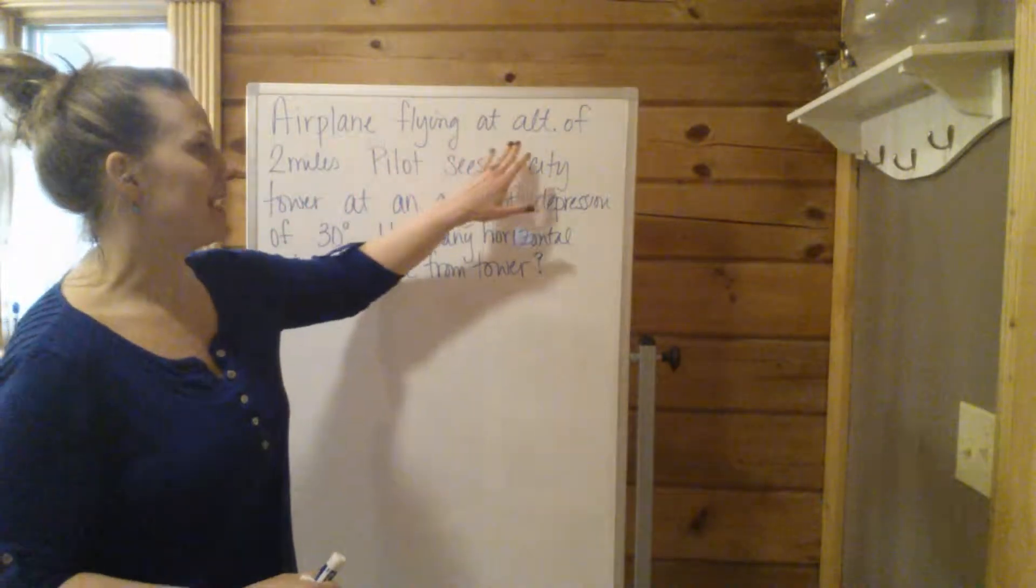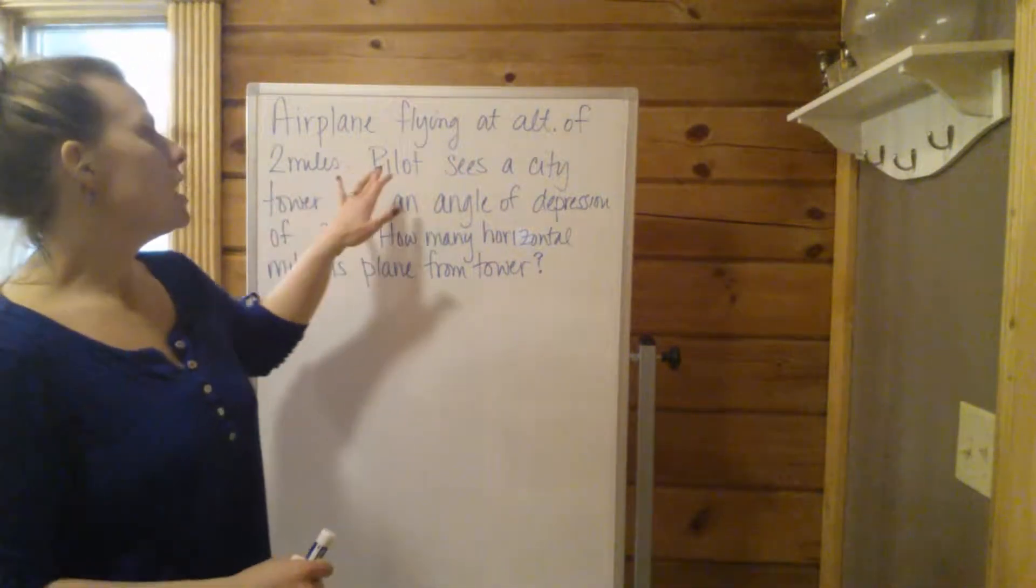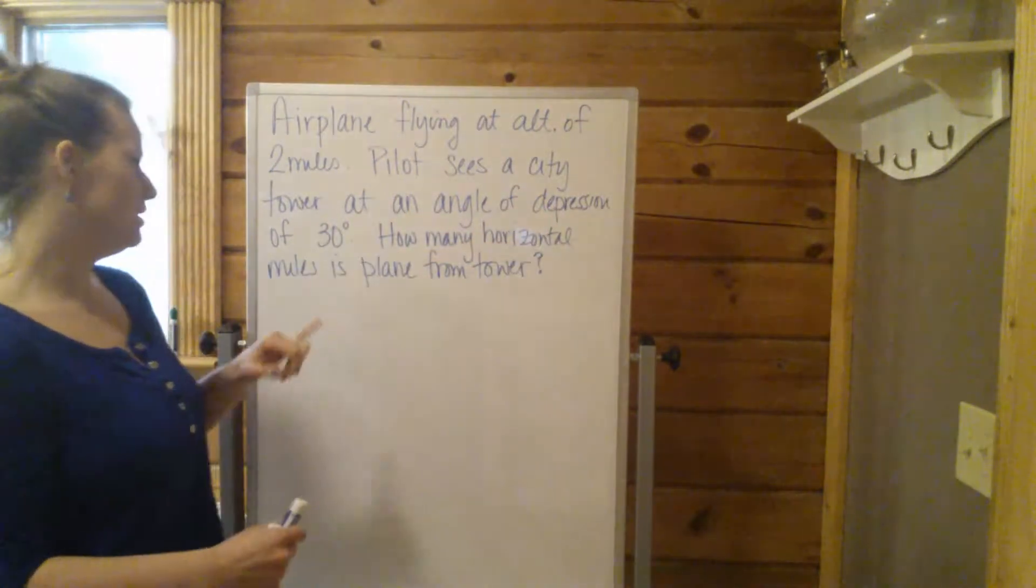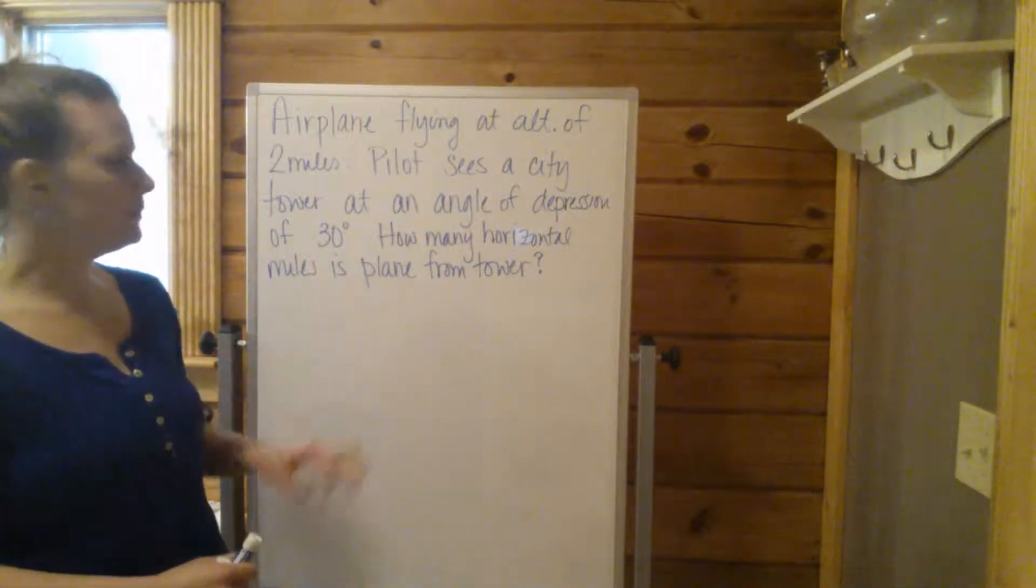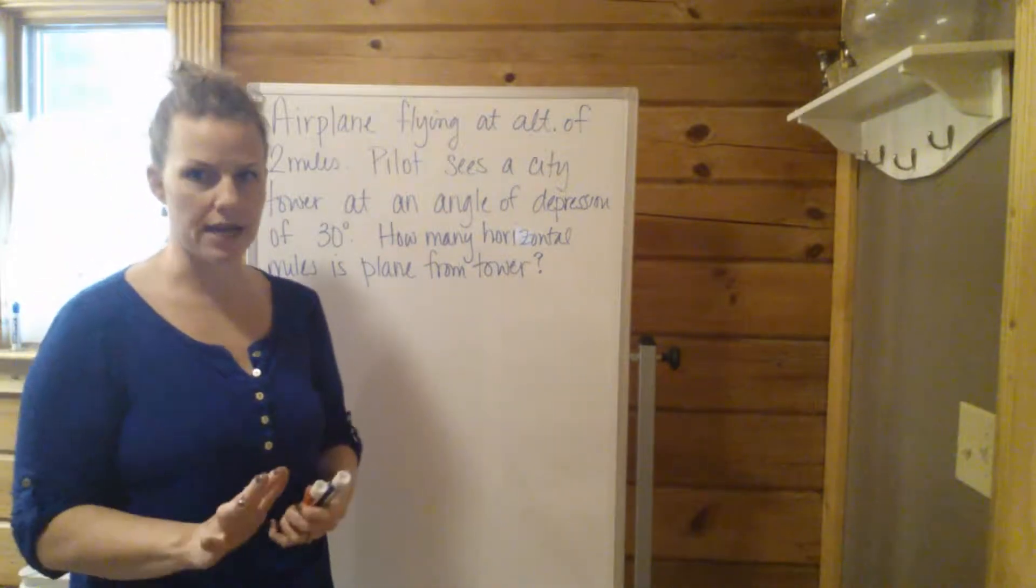We have an airplane flying at an altitude of two miles. The pilot sees a city tower at an angle of depression of 30 degrees. How many horizontal miles is the plane from the tower?